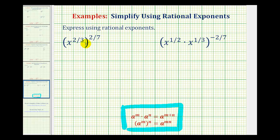So in the first example, we have x to the power of two-thirds raised to the power of two-sevenths. So we have a power raised to a power, so we'll multiply the exponents.